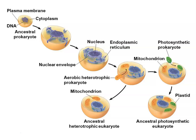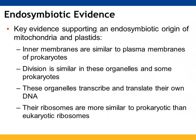Starting with an ancestral prokaryote with a plasma membrane and DNA, we see the ER form, leading to an aerobic heterotrophic prokaryote, which joins with an ancestral heterotrophic eukaryote to produce eukaryotic cells. Those that also take in a photosynthetic prokaryote form ancestral photosynthetic eukaryotes. Evidence supporting endosymbiosis: the inner membranes of mitochondria and plastids are similar to prokaryotic plasma membranes; they divide similarly to prokaryotes; they transcribe and translate their own DNA; and their ribosomes are more similar to prokaryotic ones than eukaryotic ones.